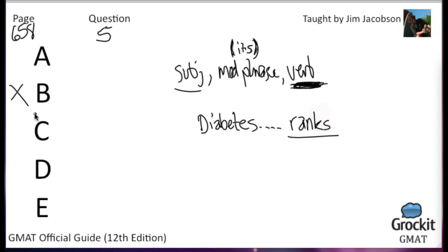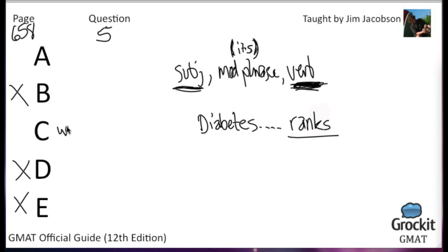We can cross off all answer choices without the correct verb form. Choice B has 'rank' — wrong. Choice D has 'are' — plural, wrong. Choice E has 'have been ranked' — plural, wrong. Three answer choices eliminated just by noticing subject-verb agreement. Now we just decide between A and C. Choice C has 'has the rank of the nation's third leading cause of death only surpassed' — 'has the rank' versus 'ranks' is wordier, which already makes it suspicious.